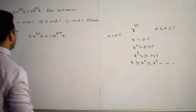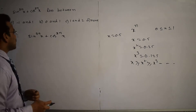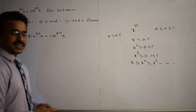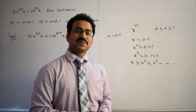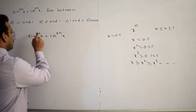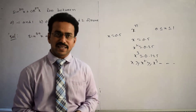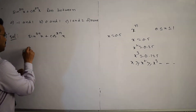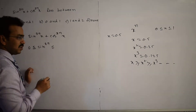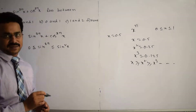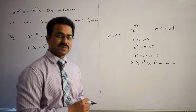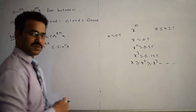Applying this concept to the given expression: sin²ⁿx means n is a natural number. If n = 1, the first term is sin²x. Since sin x always lies between −1 and 1, sin²x lies between 0 and 1 — because the power 2n is a multiple of 2, it is always non-negative. So we can write: sin²ⁿx ≤ sin²x.